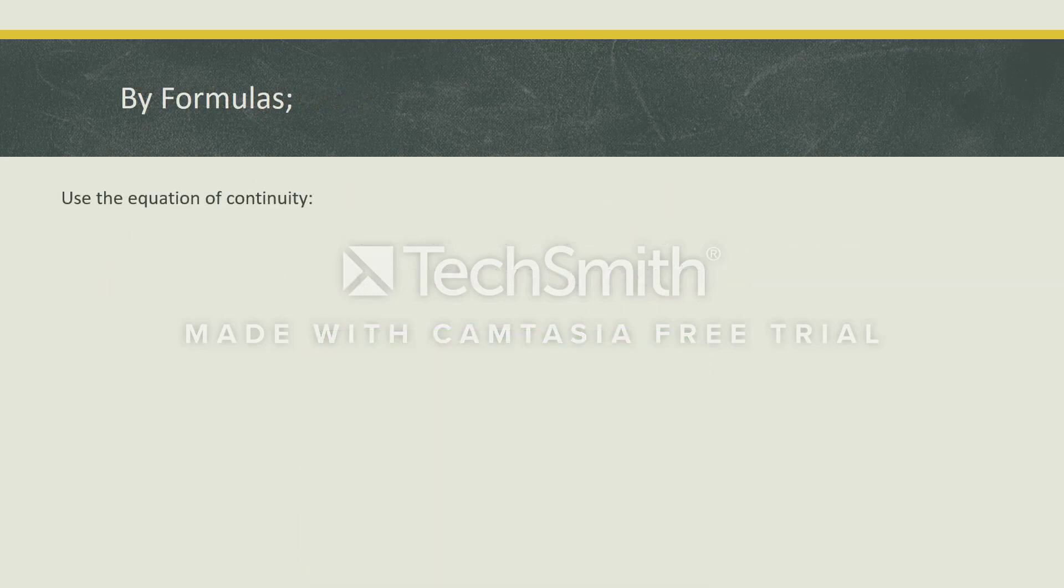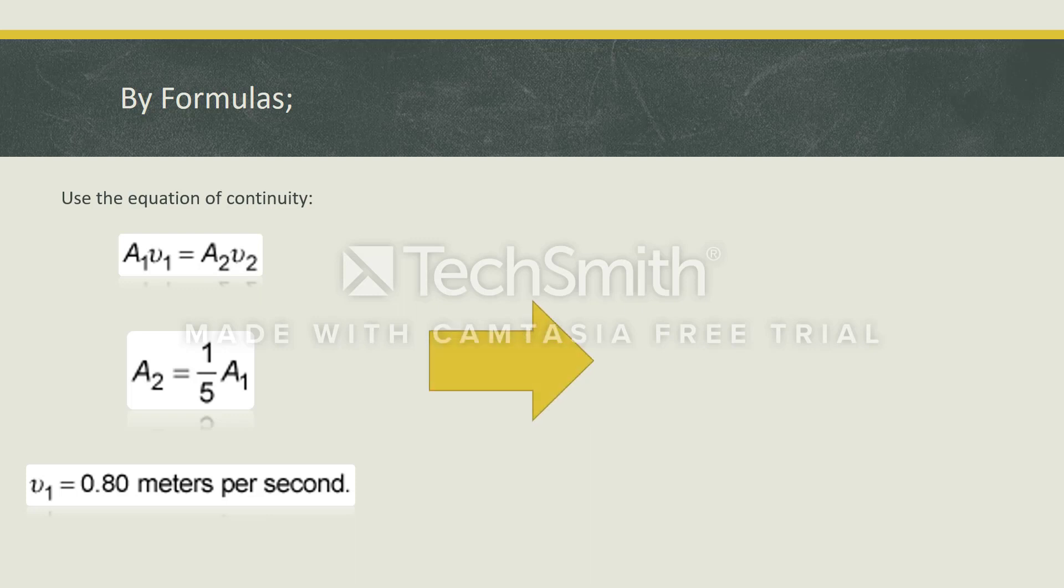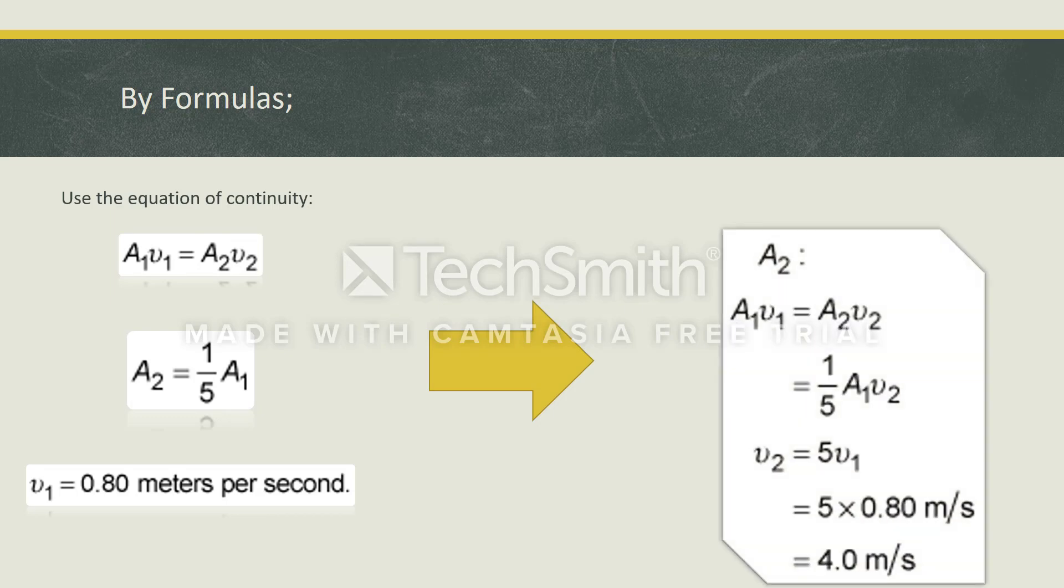From using the equation of continuity, first area times first velocity of fluid is equal to second area times second velocity. From the question, we know that second area is one-fifth of first area. And the first velocity is 0.8 meters per second. With all this information, we can calculate the second velocity as 4 meters per second.